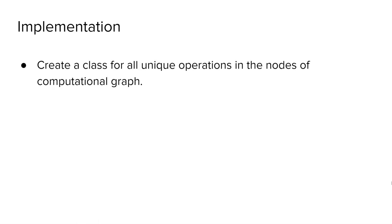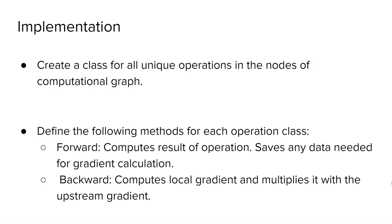How do we implement this? First, we will create a class for each node present in our computational graph. Next, we need a way to compute the result of the operation and the local gradient at the node. One way to do this is to have two methods: one named forward that computes the result of the operation and saves the inputs and outputs (as you might need them later for gradient calculation), and a second named backward that computes the local gradient and multiplies it with the upstream gradient.